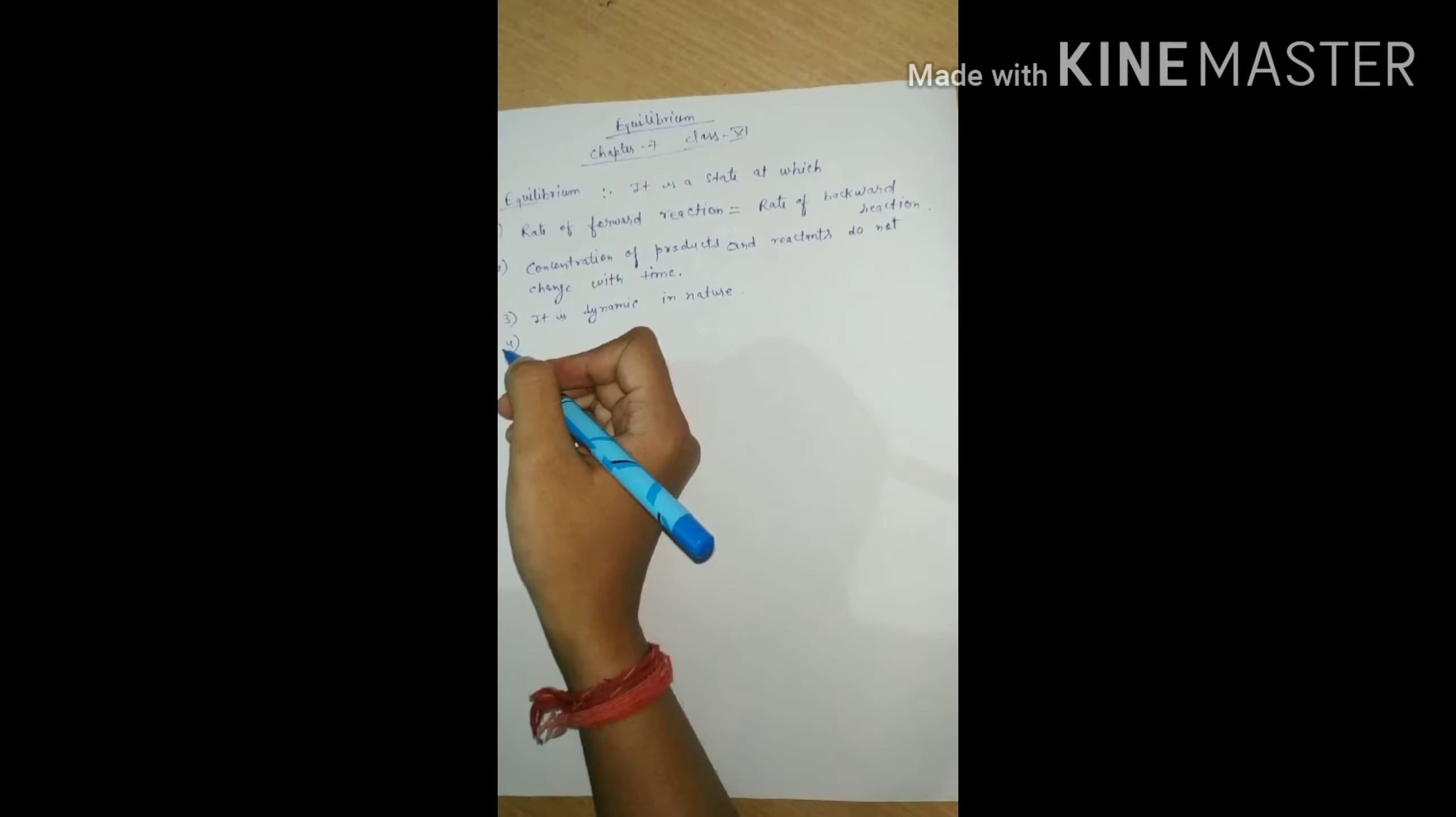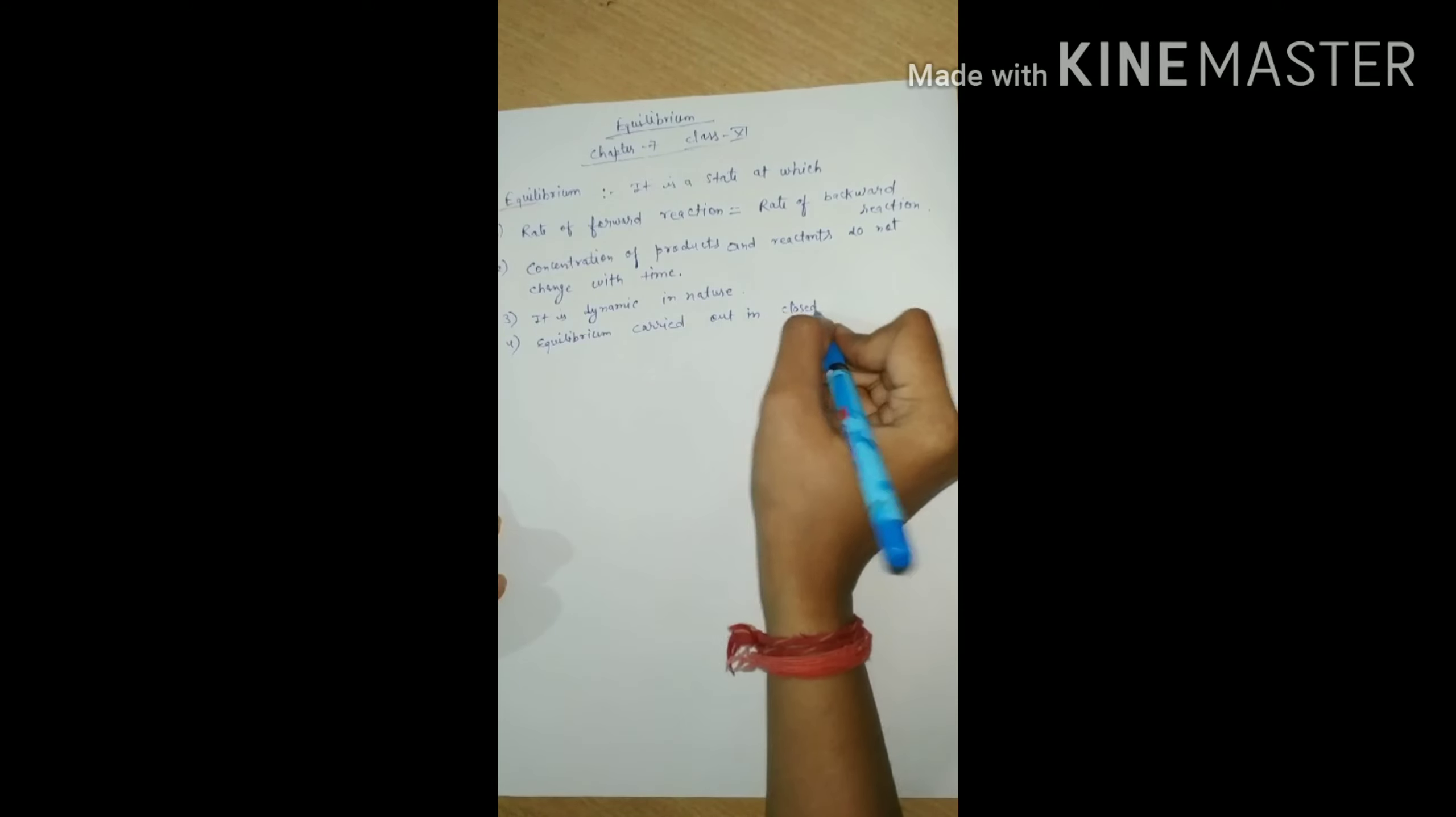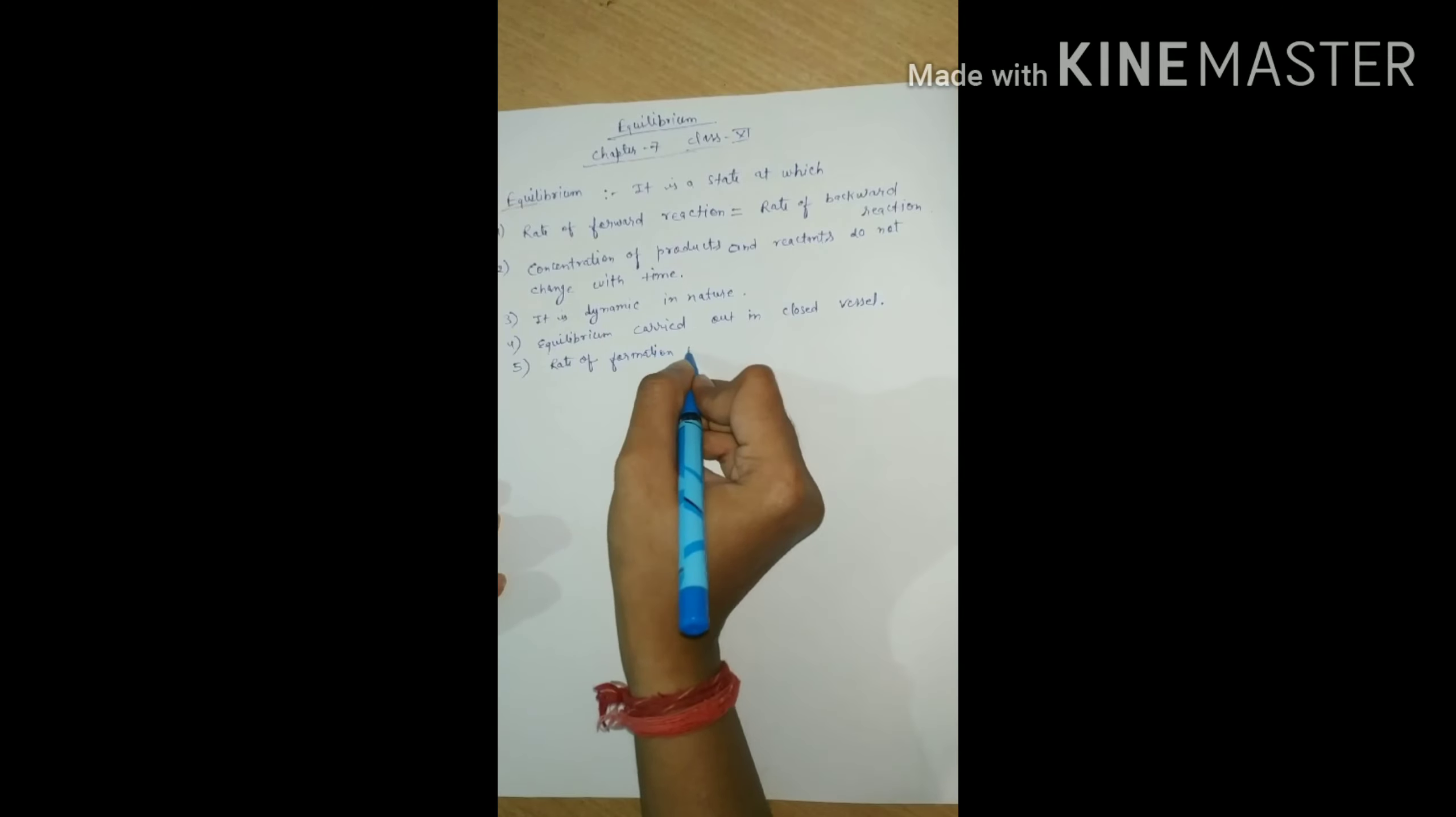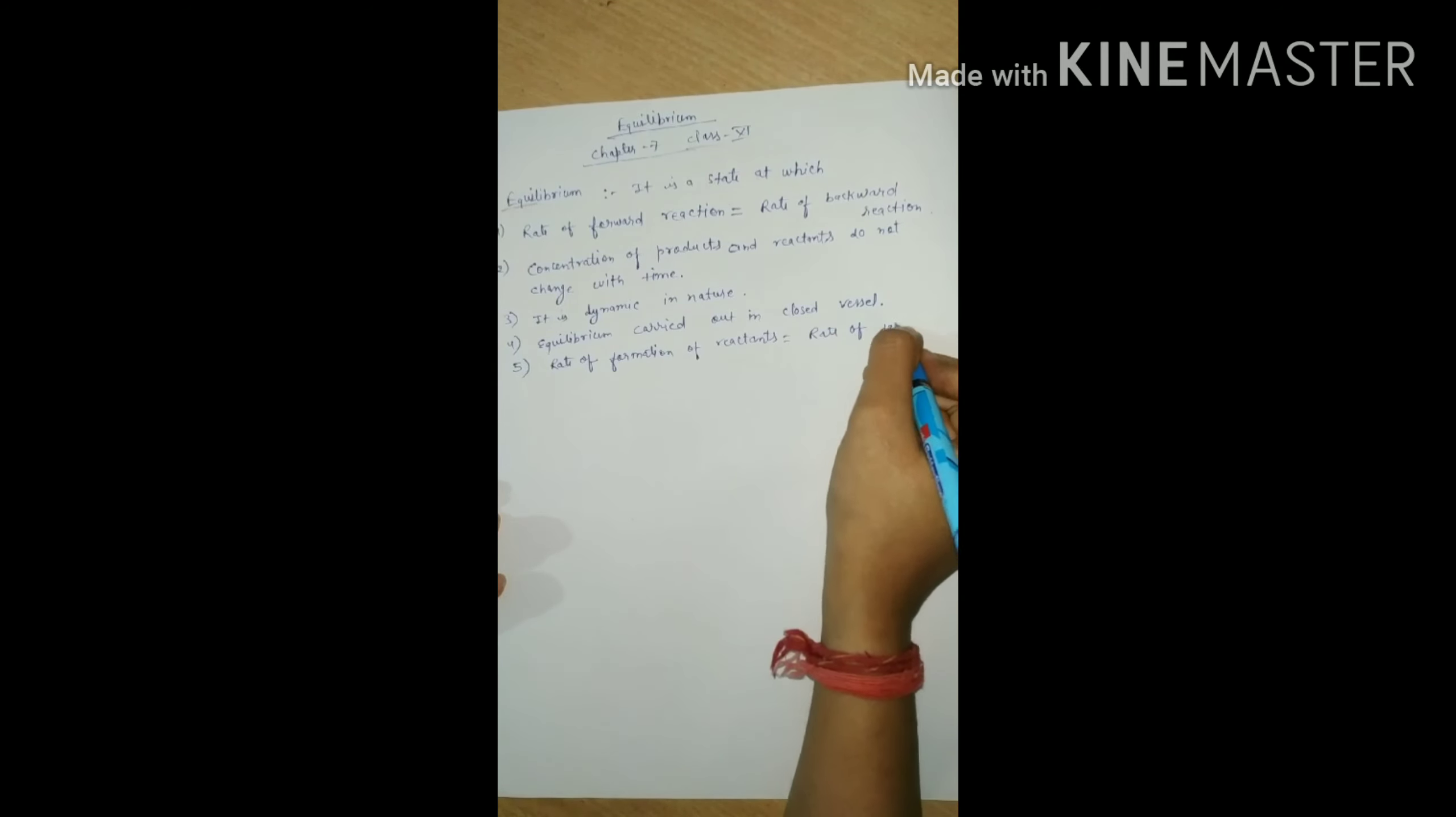Fourth point is equilibrium carried out in closed vessel only, means in open vessel equilibrium can't exist. Fifth point is rate of formation of reactants at equilibrium is equals to rate of formation of products.